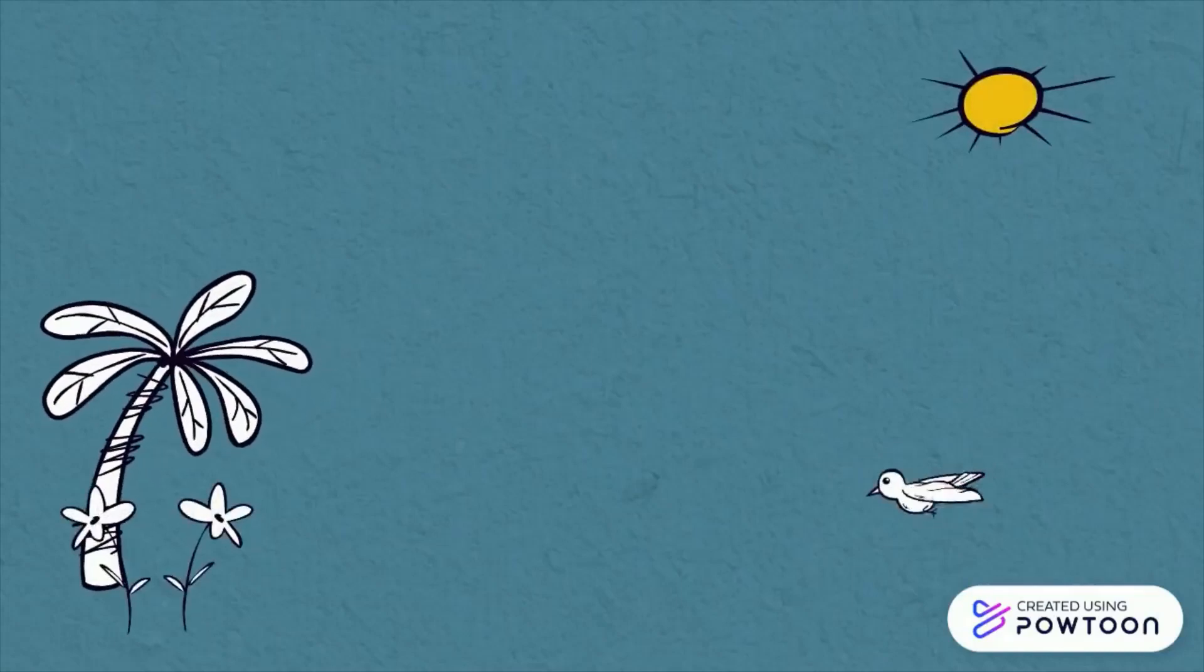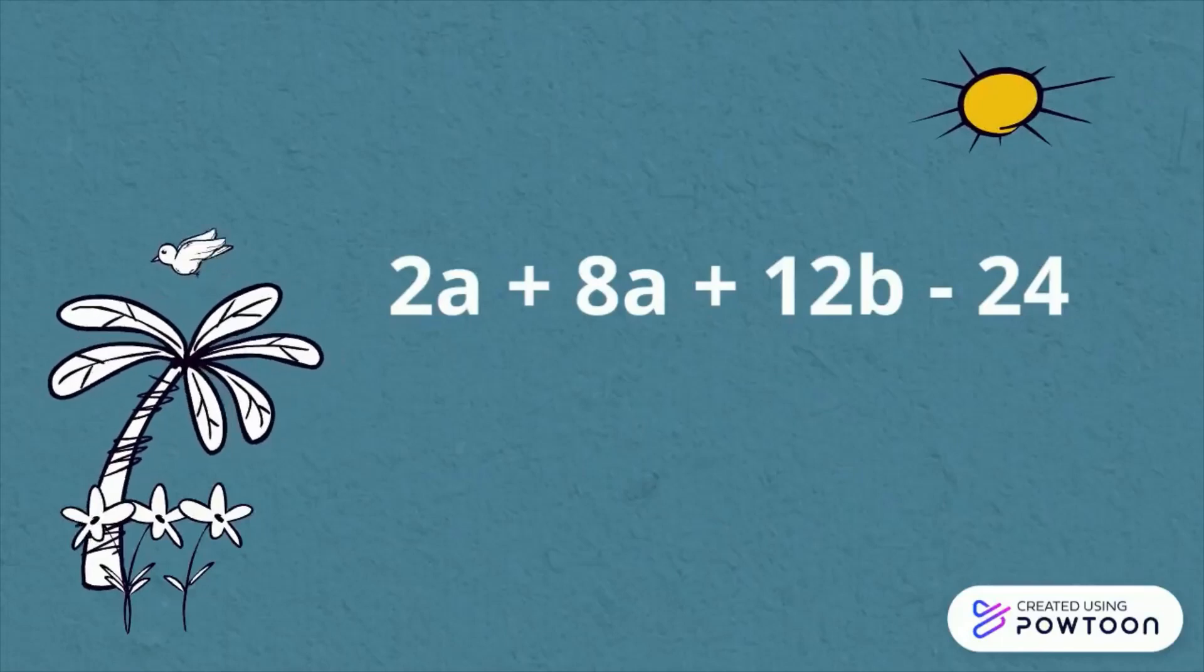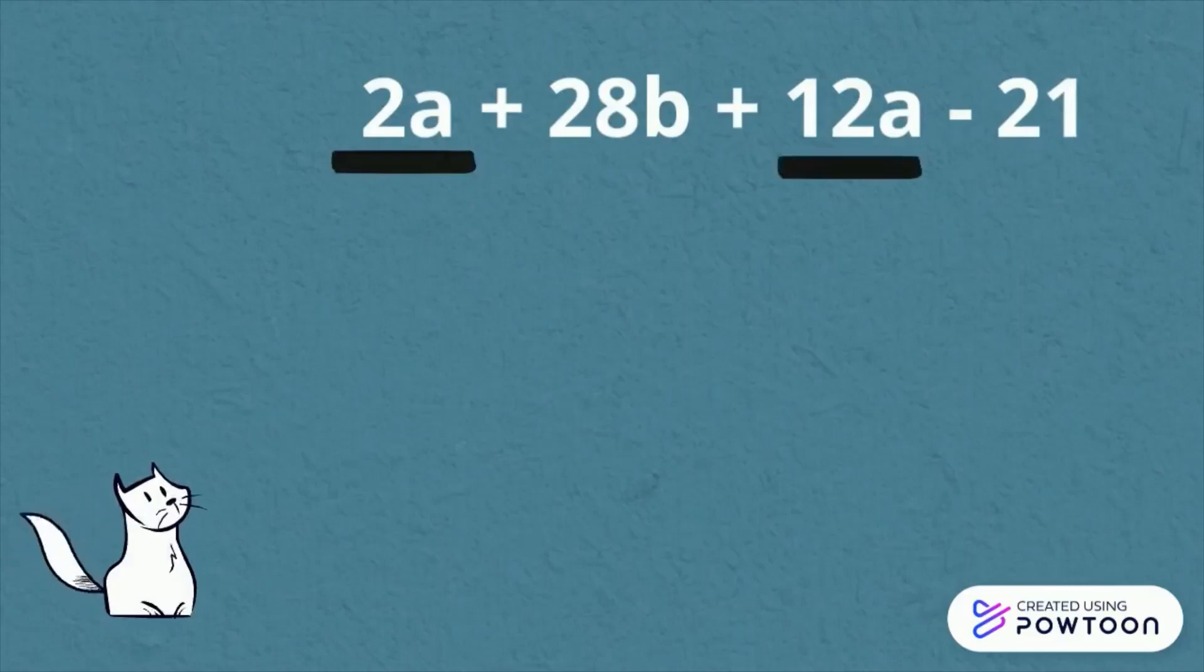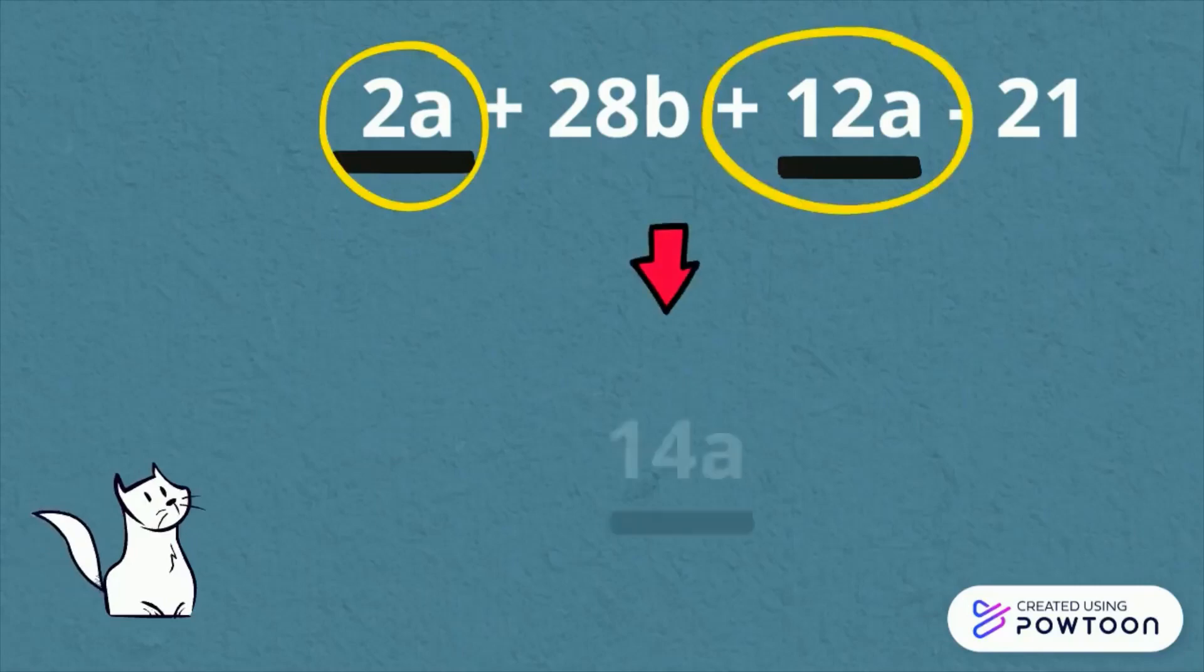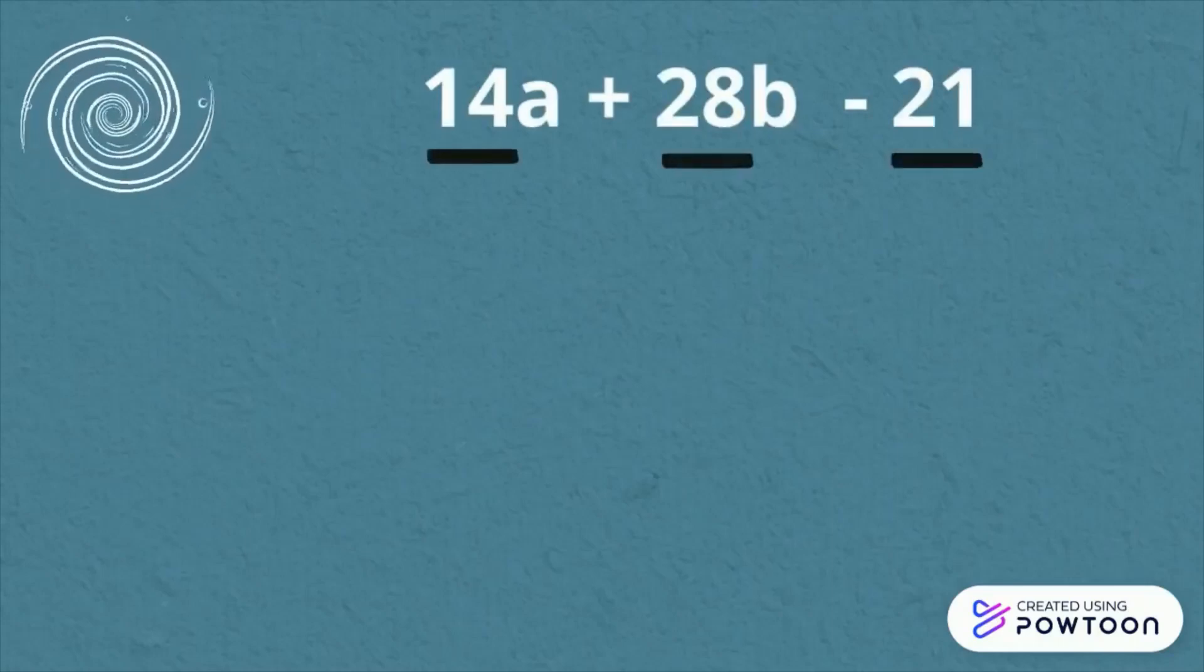How about this? We have 2a plus 12a plus 28b minus 21. We have to combine like terms first. We have 2a and positive 12a. 2a plus 12a is 14a. The common factor of 14, 28, 21 is 7.